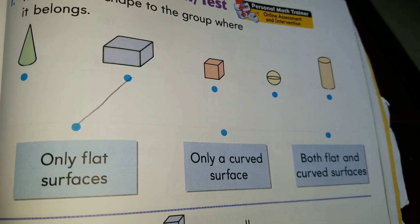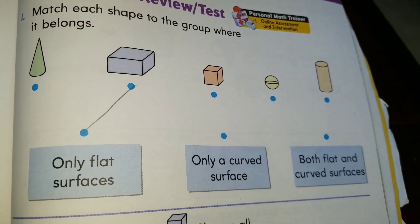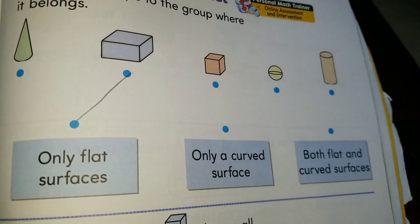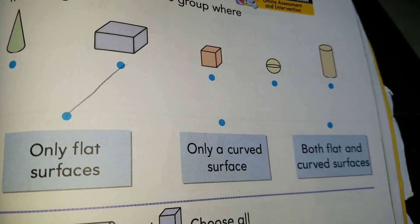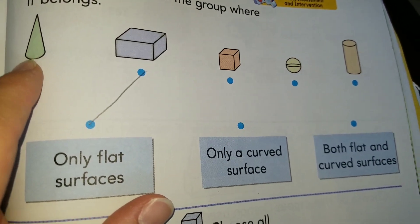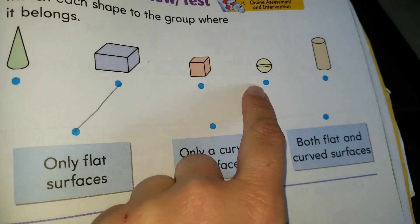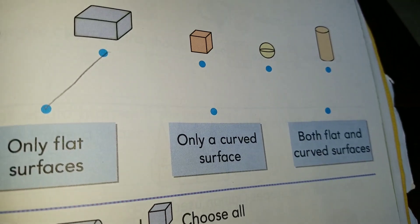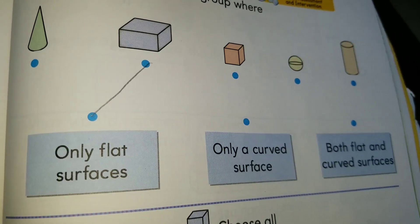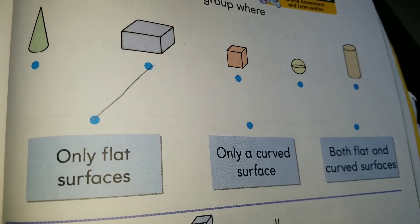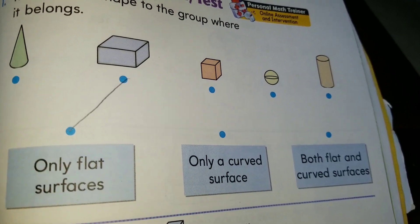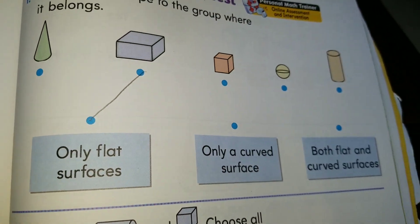Which one is the other shape that all of its surfaces are flat? We need one more shape here. Which one is it? Could it be the cone? Could it be the cube? Could it be the sphere or the cylinder? We're looking for one more shape that all of its sides are flat.